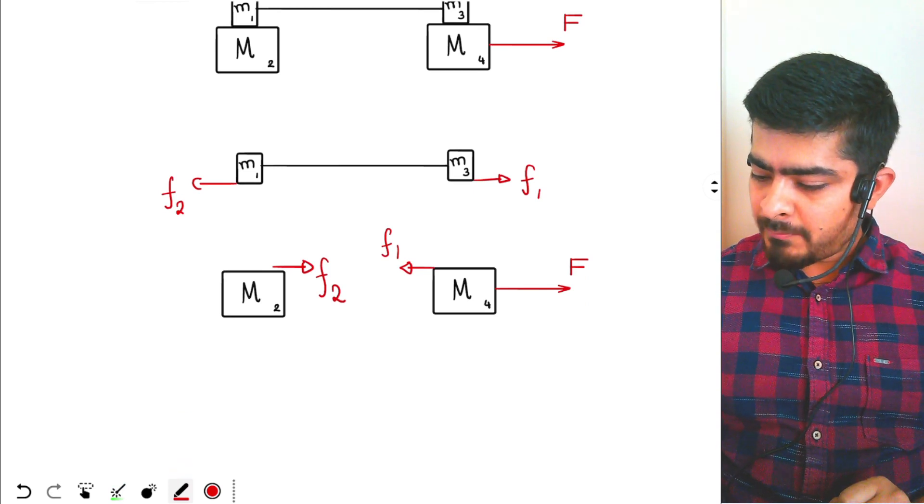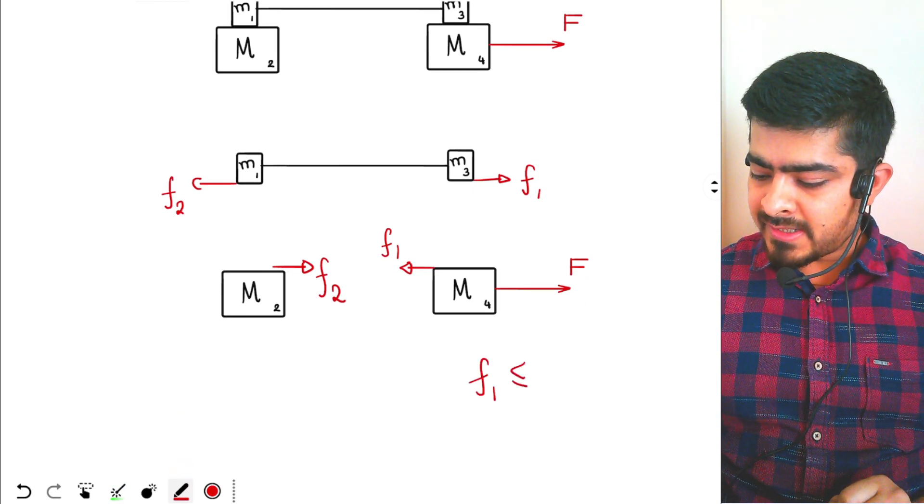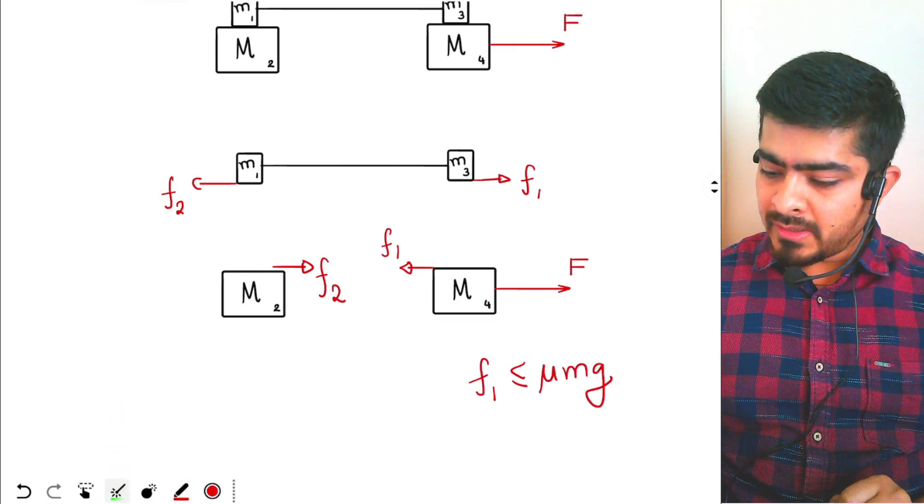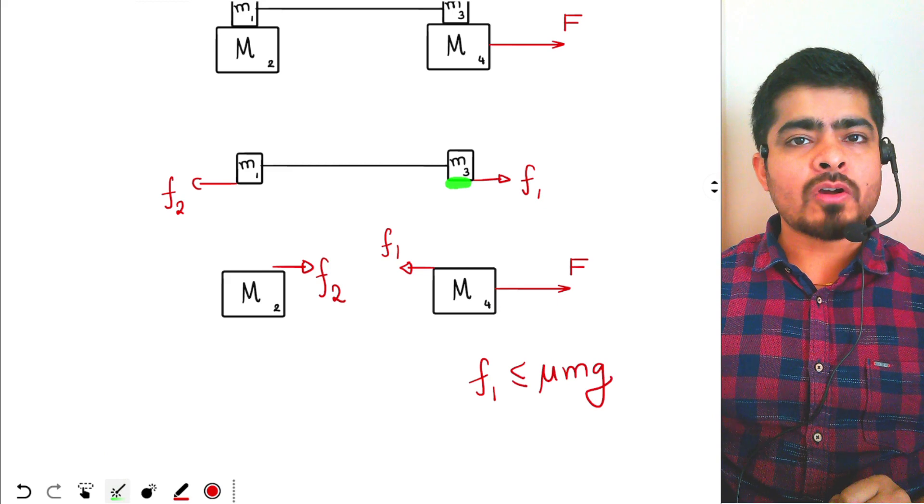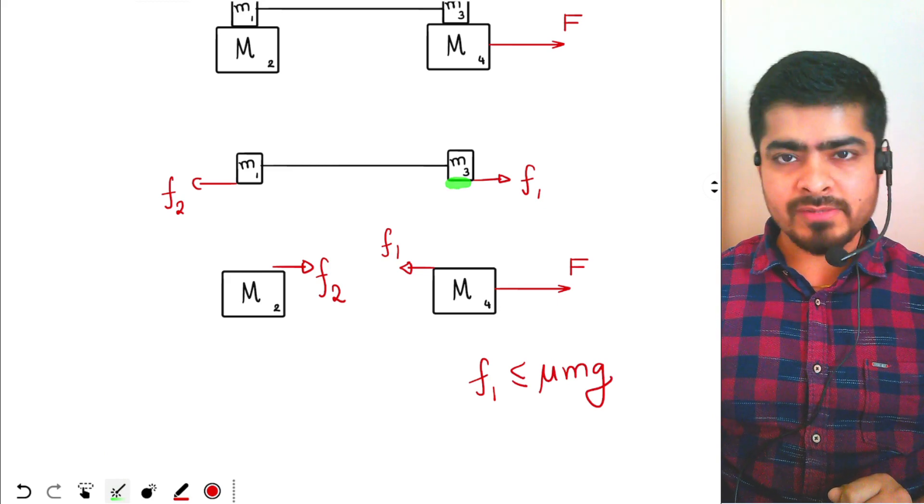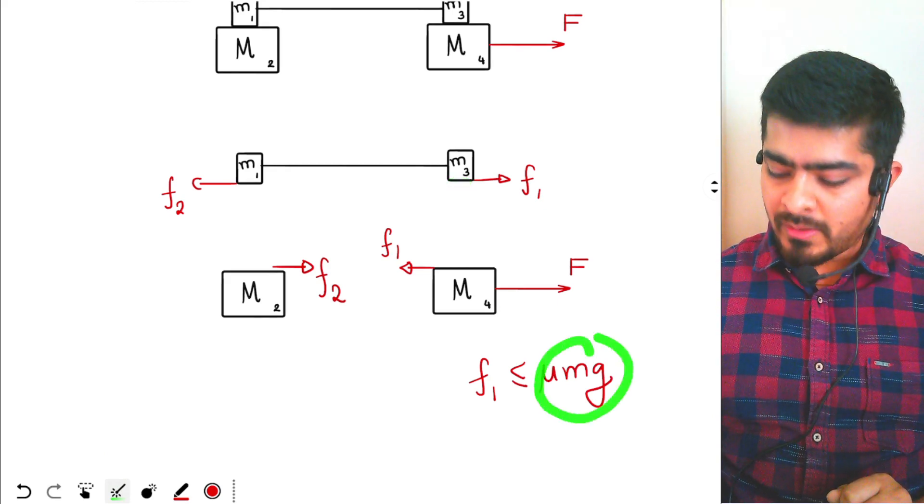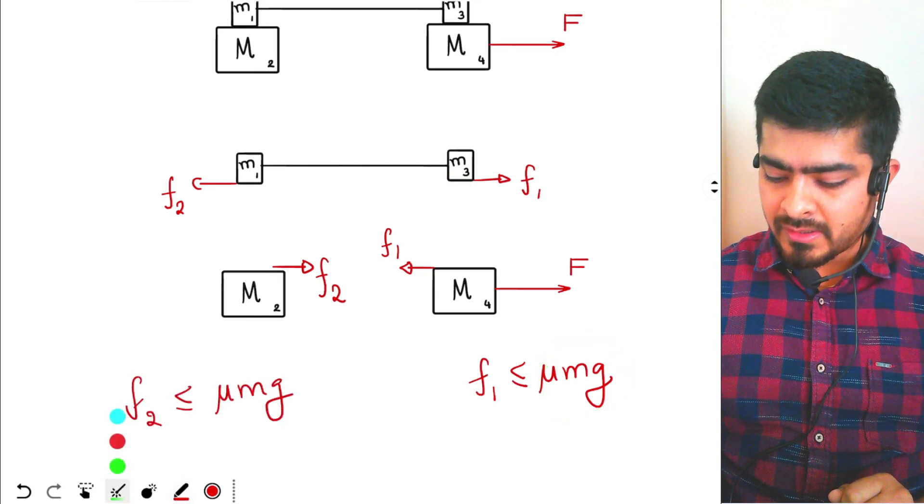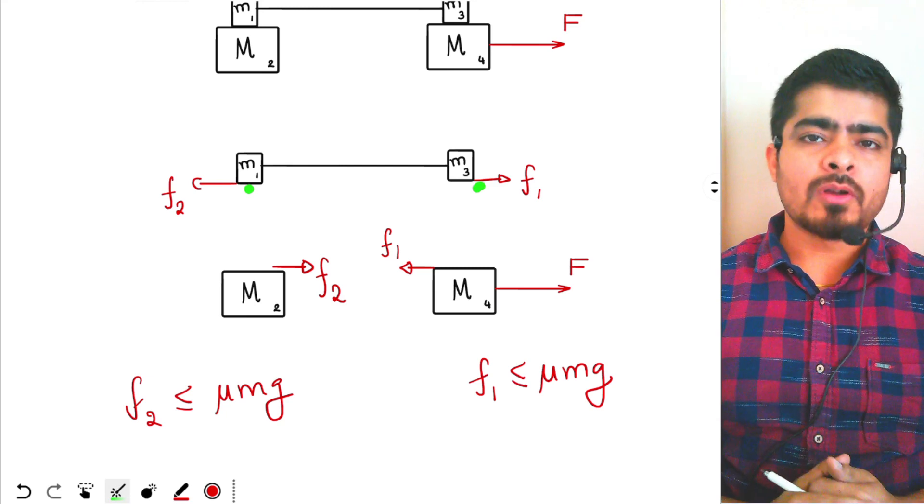What is the maximum possible value of F1? So F1 will be less than equal to mu mg. Why? The normal force at the bottom of this block is mg, small mg, so the maximum value will be mu mg. Same goes for F2 also. F2 will also be less than equal to mu mg. Coefficient of friction is same on both the blocks.